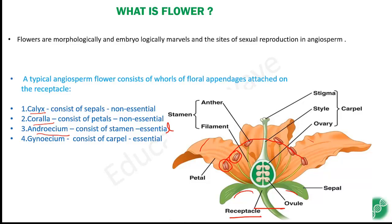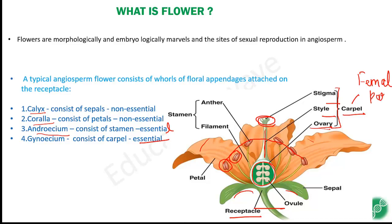The fourth one is gynoecium, which consists of carpels and is also essential. A carpel has three parts: stigma, style, and ovary. The topmost part is called stigma, the long stalk is called style, and the circular part at the base is called ovary. These three together form the female part, called carpel. The stamen has two parts: anther and filament. The top part is the anther, and the long stalk is the filament.